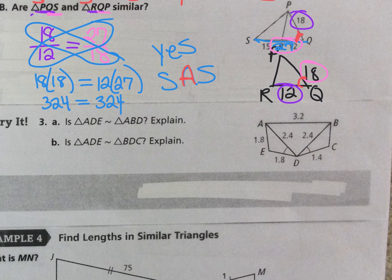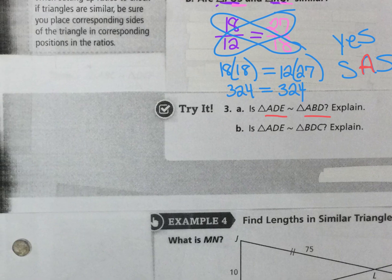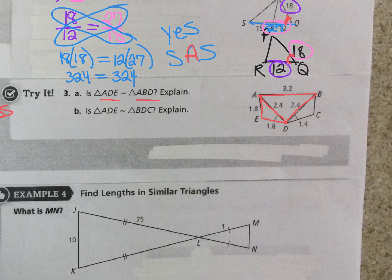So is ADE similar to ABD? Not congruent, similar. So we're looking here at this one, ADE, and this one, ABD. So we want those two. And if we look, it has to be side, side, side, doesn't it? If it's going to work, it's going to have to be side, side, side. So let me do it over here. This is number A. Has to be side, side, side because I don't have any angles between those two.